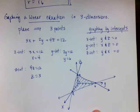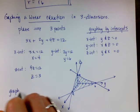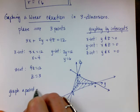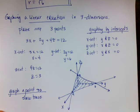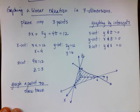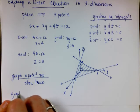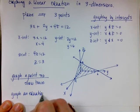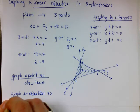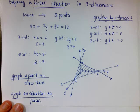Just a couple of reminders: if you're going to graph a point in 3D, you have to show the trace — that way I know you're going the correct direction in each of our three directions. And if I'm going to graph an equation, you have to show the plane. Those are the two things most people seem to get confused about.